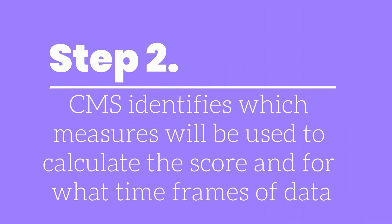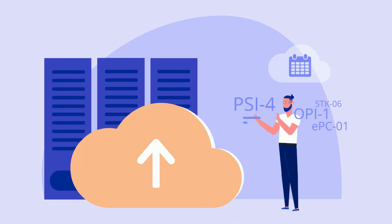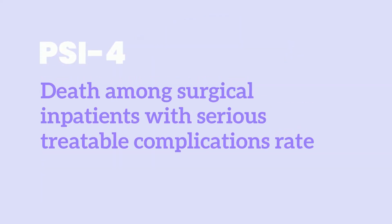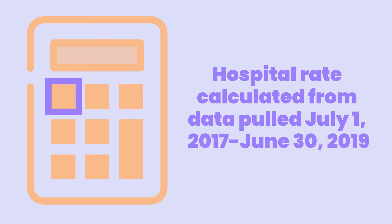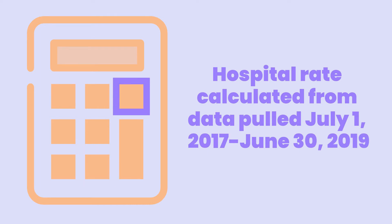In step 2, CMS identifies which measures will be used to calculate the score, and for what time frames of data. CMS selects which measures they will use to make the star rating score and also decides what the date range is used for performance rates. For instance, the measure PSI 4, Death Among Surgical Inpatients with Serious Treatable Complications Rate, CMS uses a hospital rate calculated from data pooled July 1, 2017 to June 30, 2019. In the description below, we put a link to an Excel sheet with the measures and date timeframes used for the star ratings calculation.